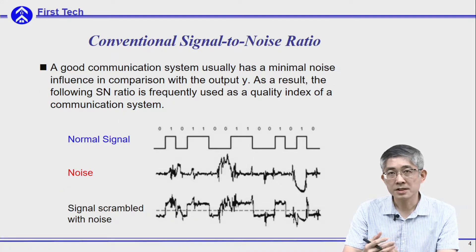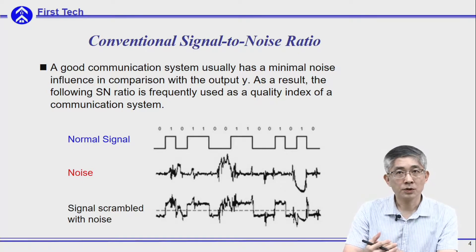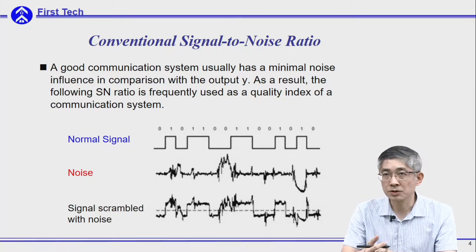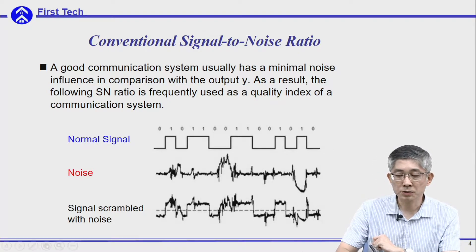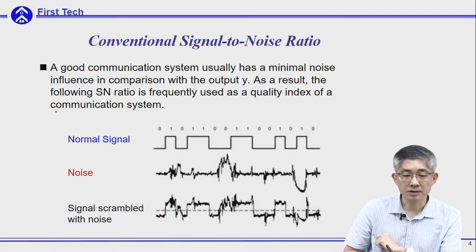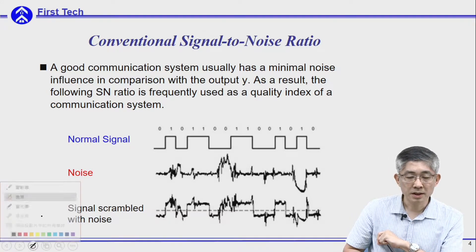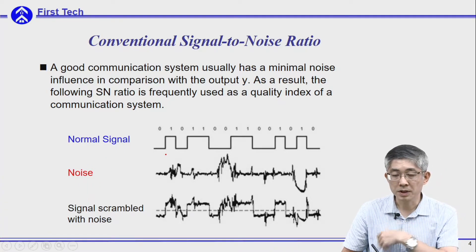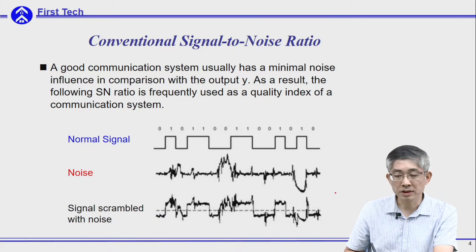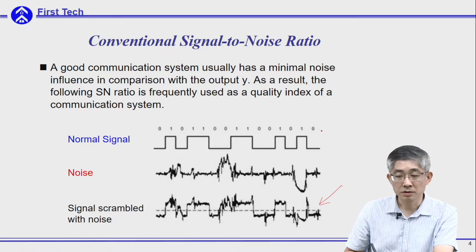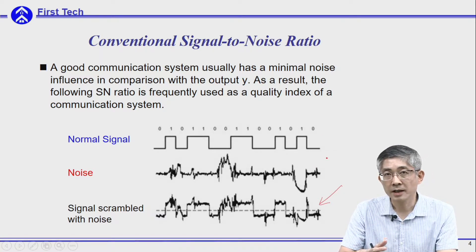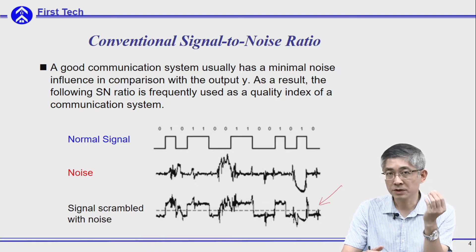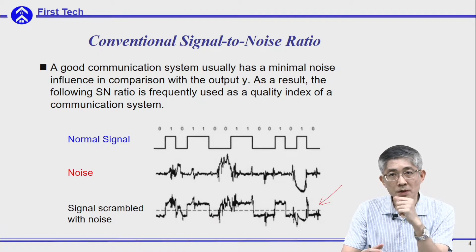What is the signal-to-noise ratio? If you want to design a good communication system, you usually want to deliver a signal. But there is some noise associated with your output, so the actual signal will be a combination of the true signal and the noise. A good design can reduce the interference of the noise as small as possible.